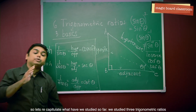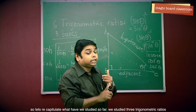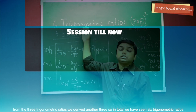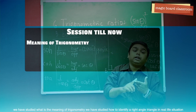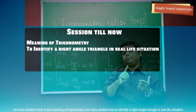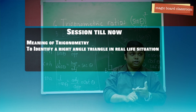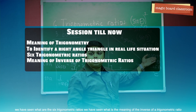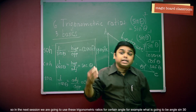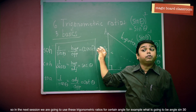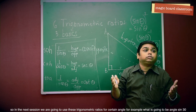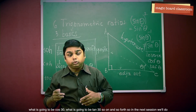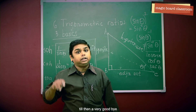Let us recapitulate what we have studied so far. We studied three basic trigonometric ratios, then derived another three from them, giving us six trigonometric ratios in total. We have seen what the meaning of trigonometry is, how to identify a right angle triangle in real life, and what the meaning of an inverse trigonometric ratio is. In the next session, we are going to use these trigonometric ratios for certain angles — like sine 30, cos 30, tan 30, and so on. Till then, a very good bye.